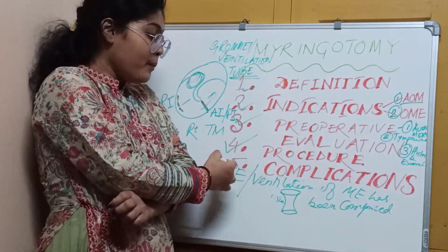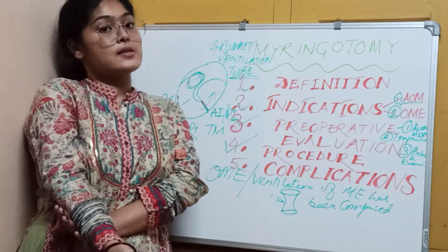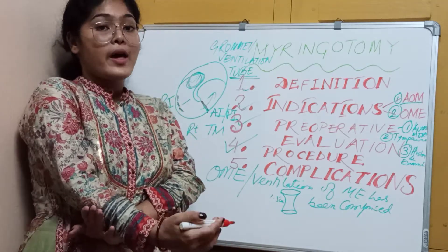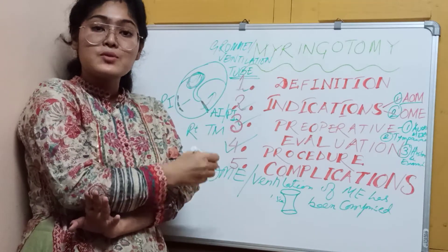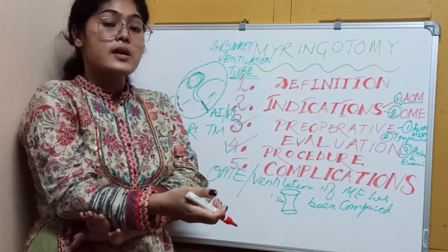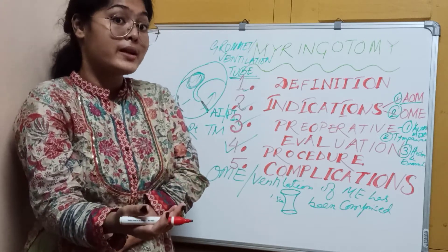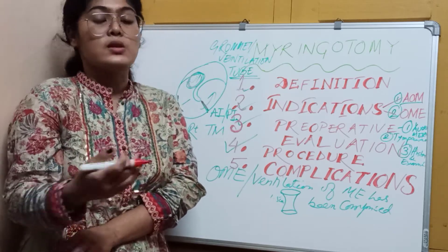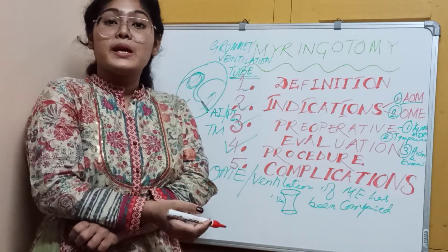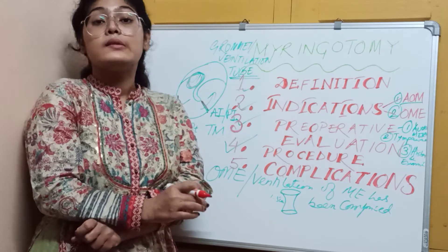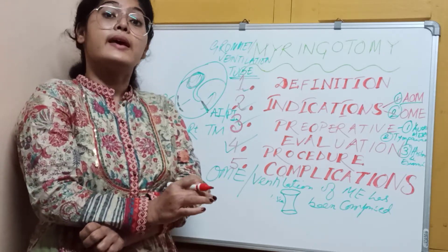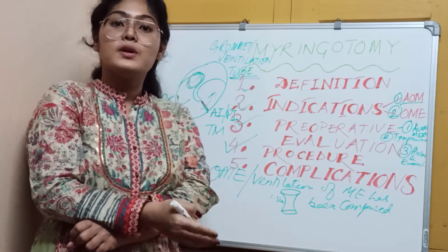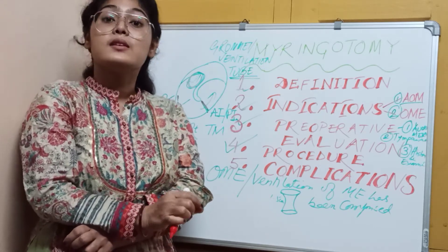Now for complications. The first is otorrhea or ear discharge — since a perforation has been made in the tympanic membrane, ear discharge is expected. In otitis media with effusion we actually want that discharge, but if it keeps persisting then it is a complication. The second complication is injury to the ossicles. The third is lacerations in the external auditory canal while passing toward the tympanic membrane.